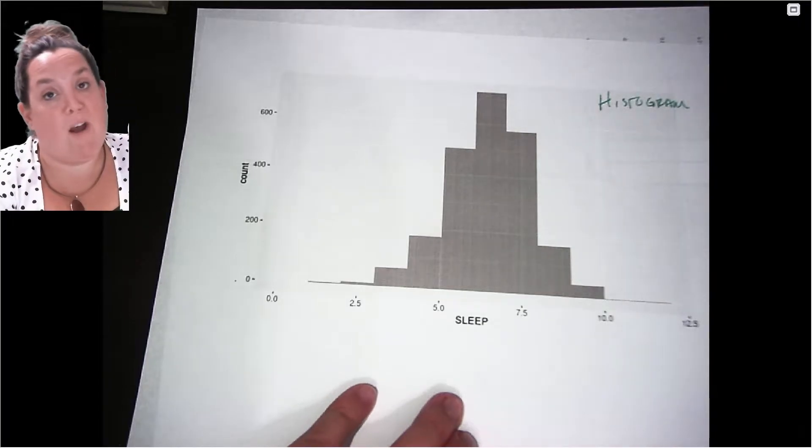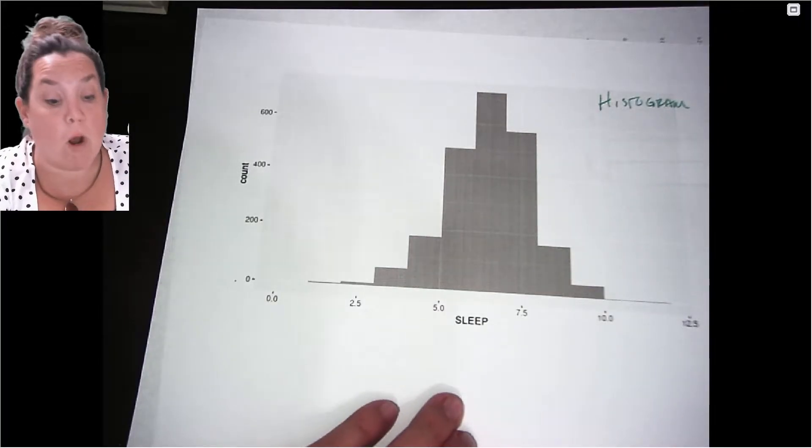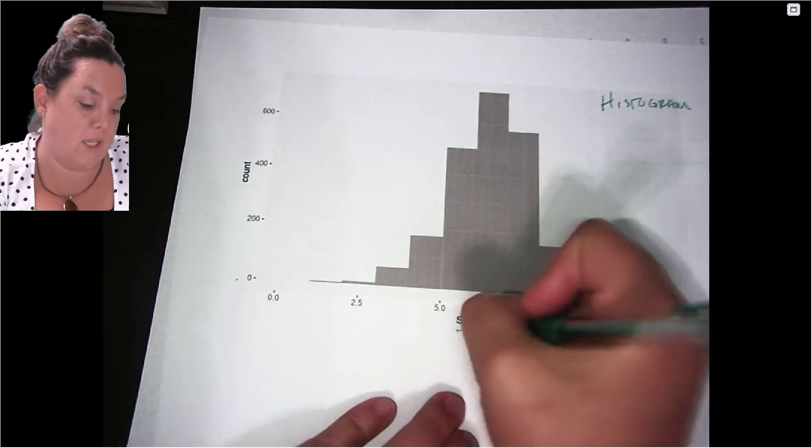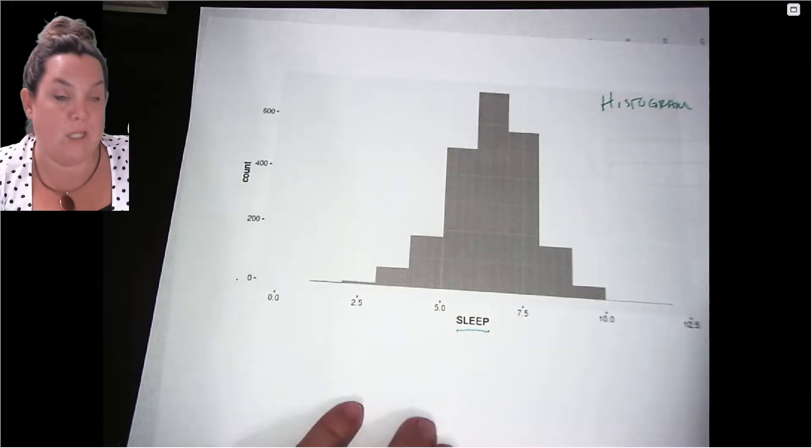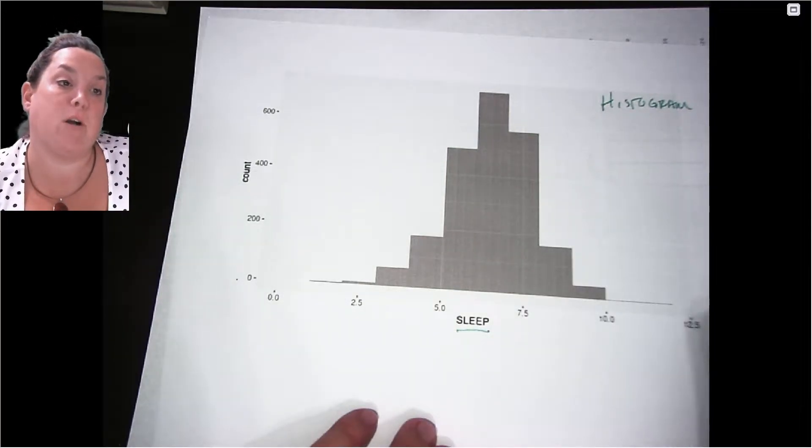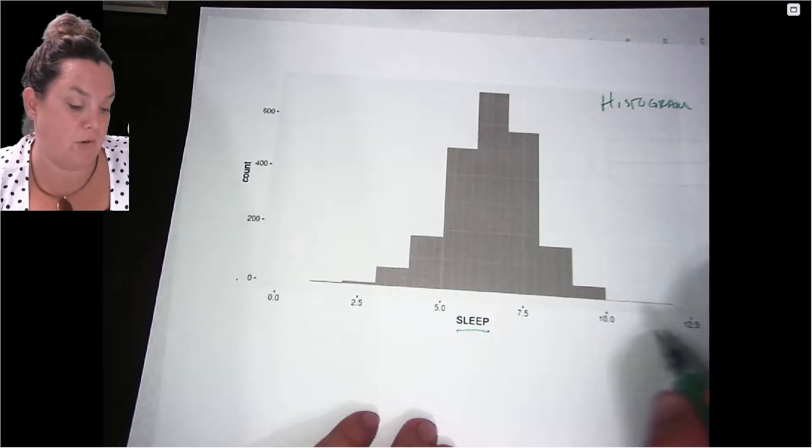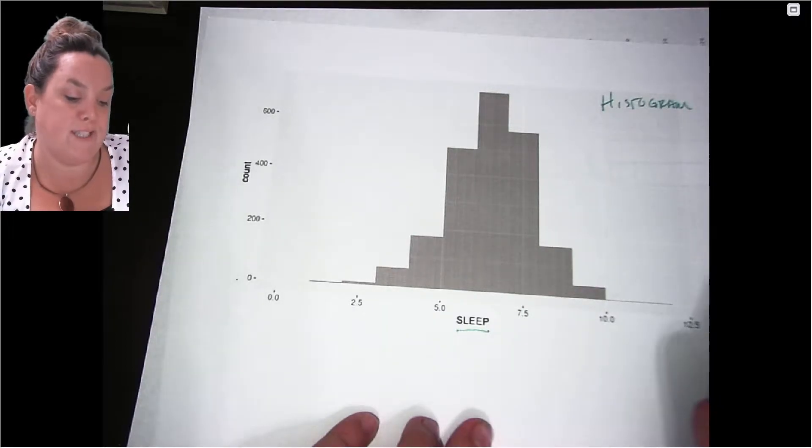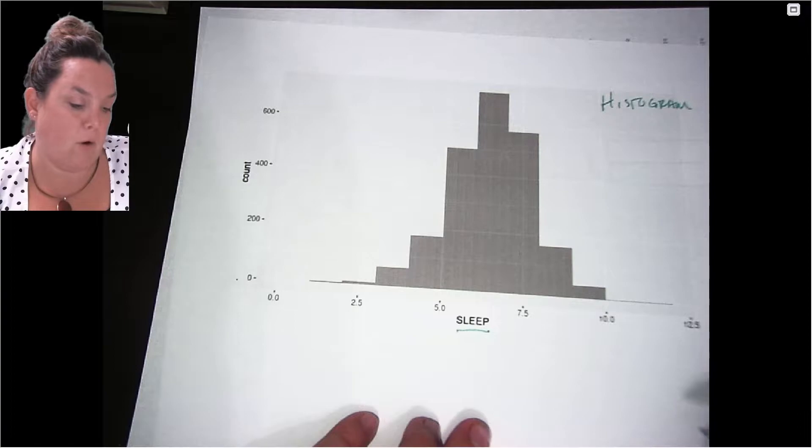Now this is a type of graphical display for one quantitative variable. Here you can see our quantitative variable is sleep, and remember we talked about how quantitative variables usually have units and can have an average calculated for it.